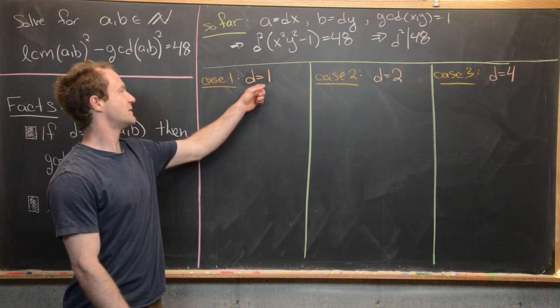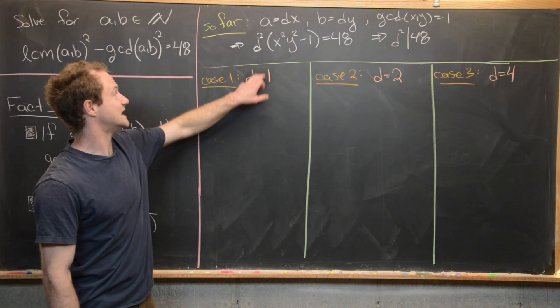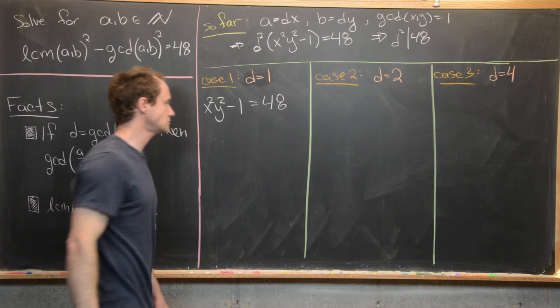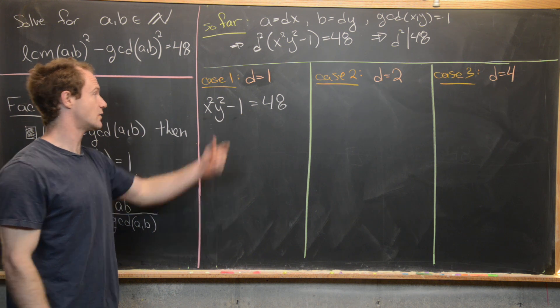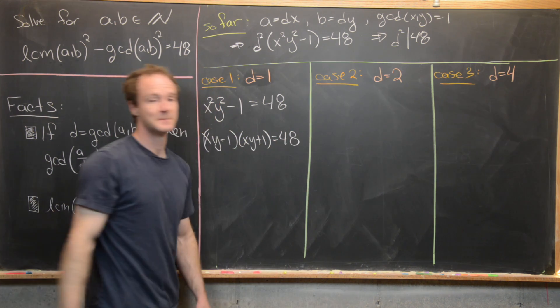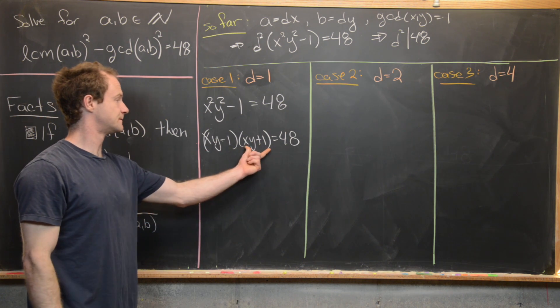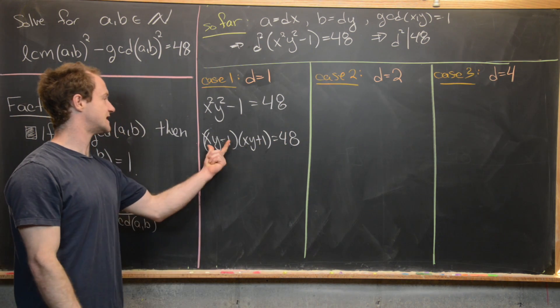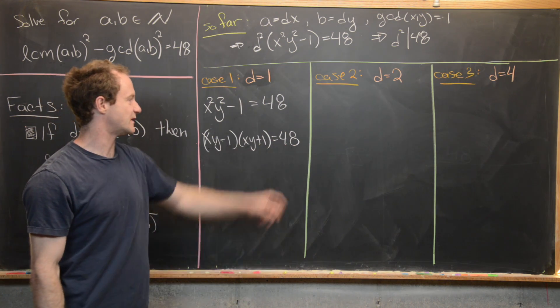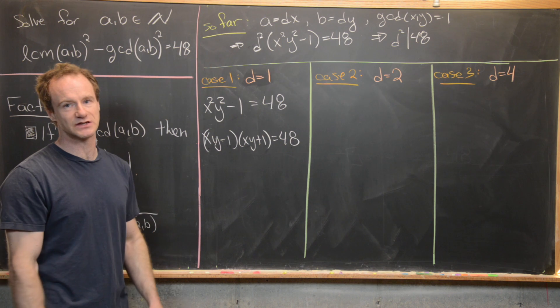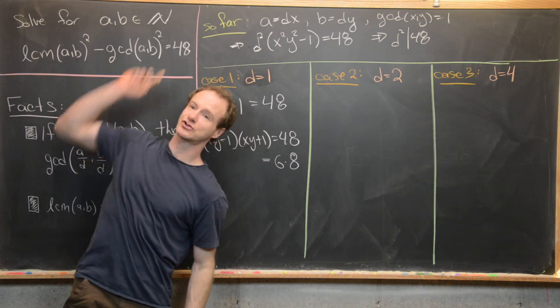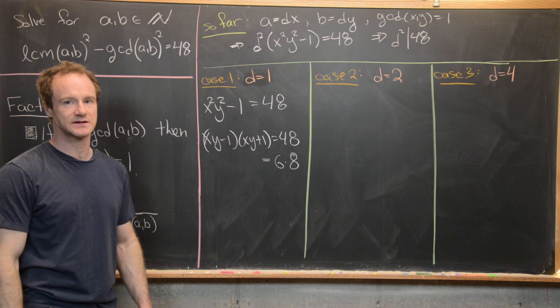So let's maybe look at the D equals 1 case. So notice plugging D equals 1 into this equation will very simply give us X squared, Y squared minus 1 equals 48. But now we can just go ahead and factor this side of the equation. And that's going to give us X, Y minus 1 times X, Y plus 1 equals 48. And now what we want to do is look for two numbers that multiply to 48. But the important thing to notice here is that they must differ by 2. Because notice that X, Y minus 1 and X, Y plus 1 differ by 2. So can we factor 48 into a factor pair that differs by 2? And we can. And the way to do that is by writing it like 6 times 8. And notice we're working over just natural numbers. Otherwise, we might also have minus 6 times minus 8.